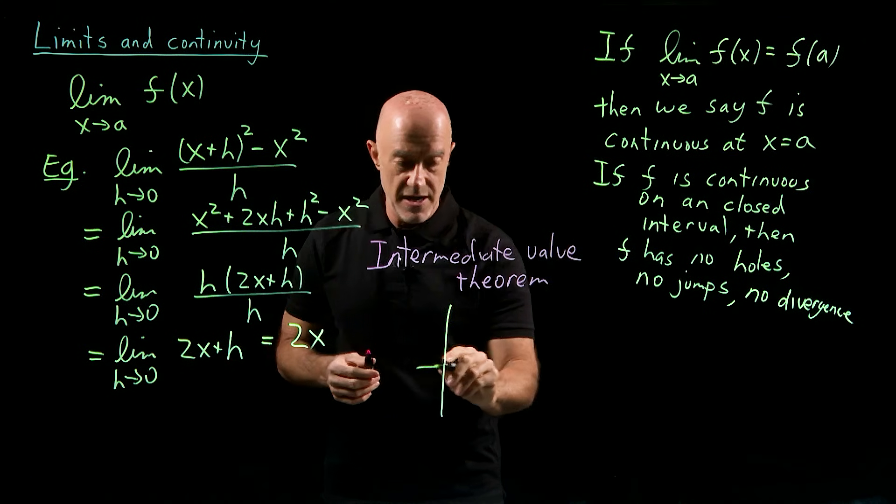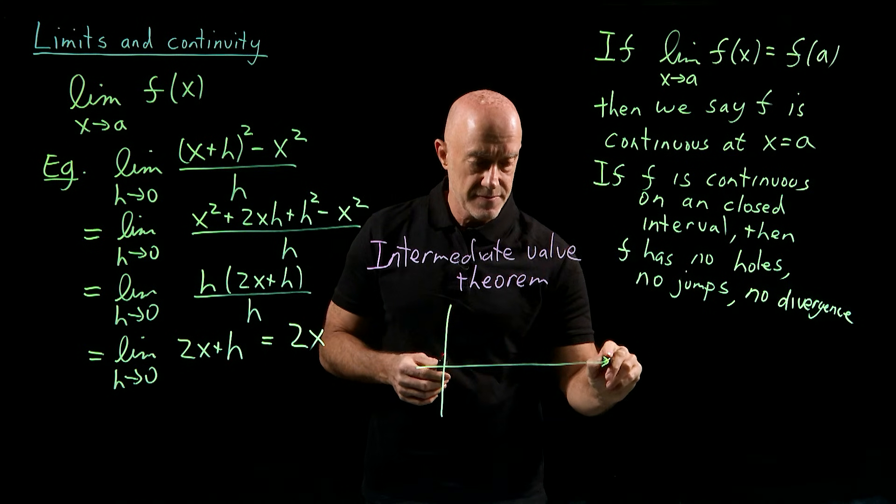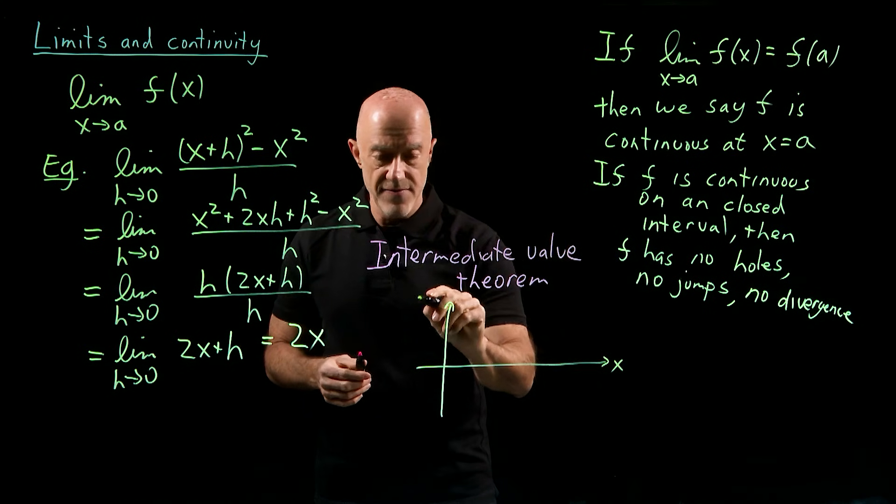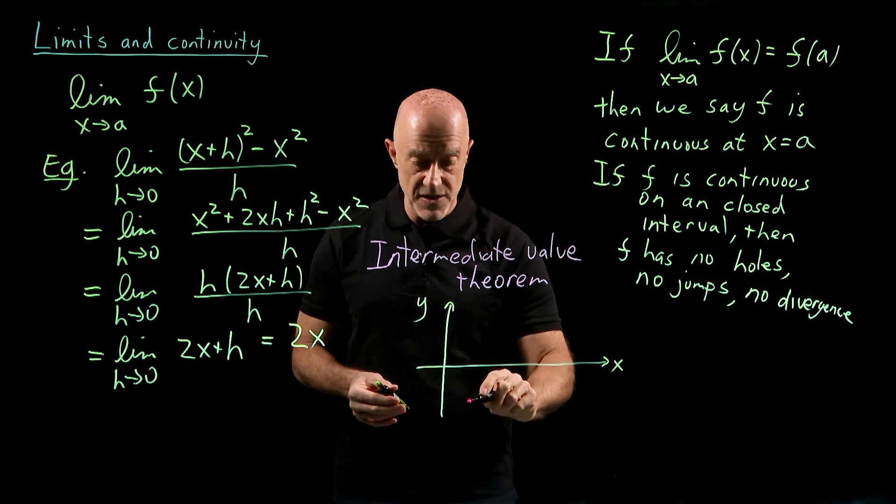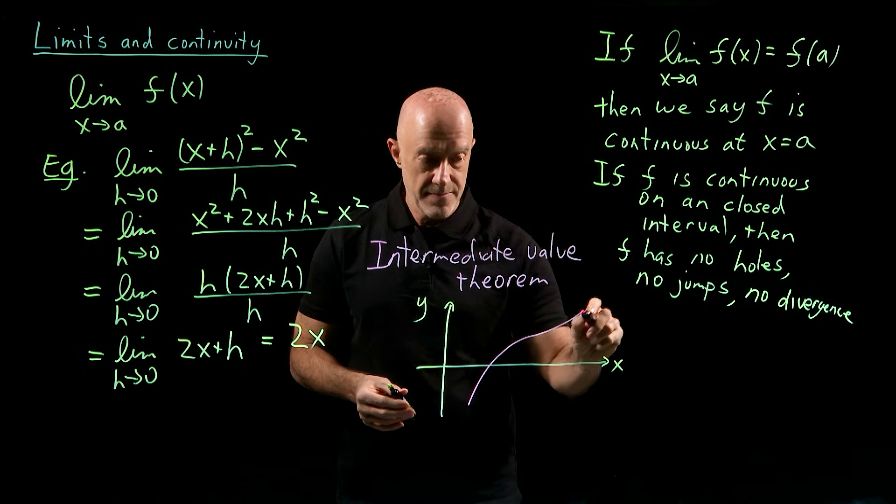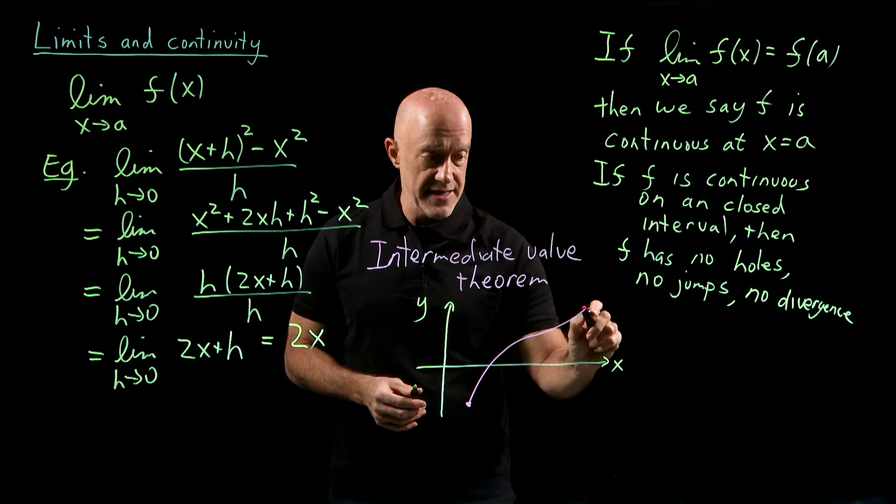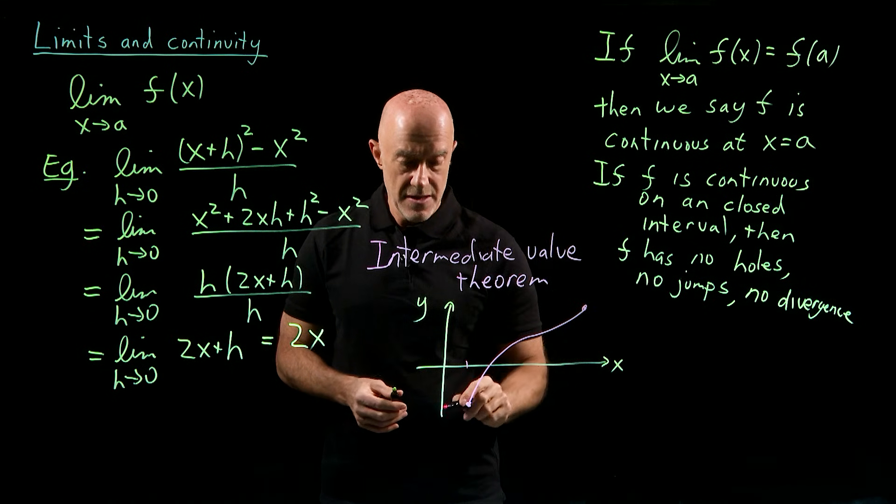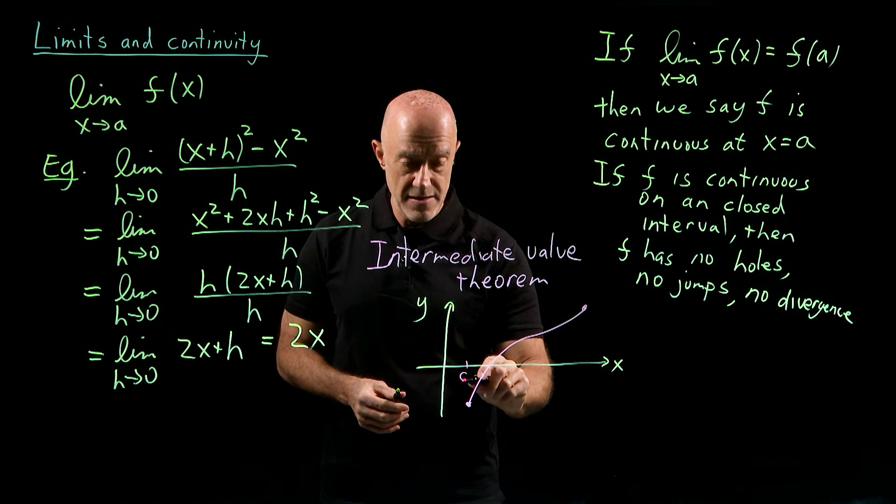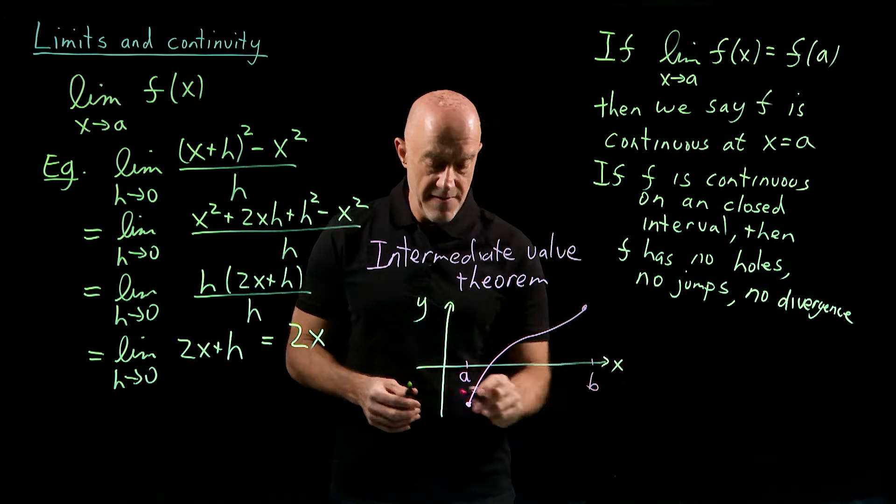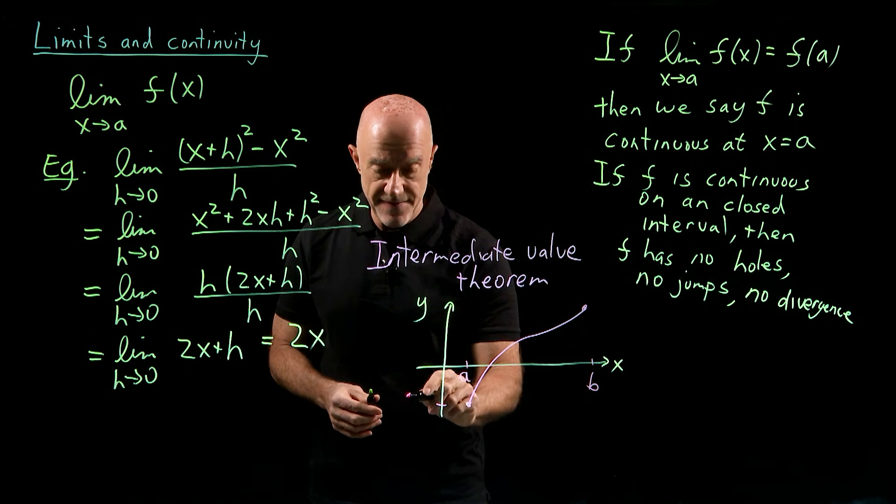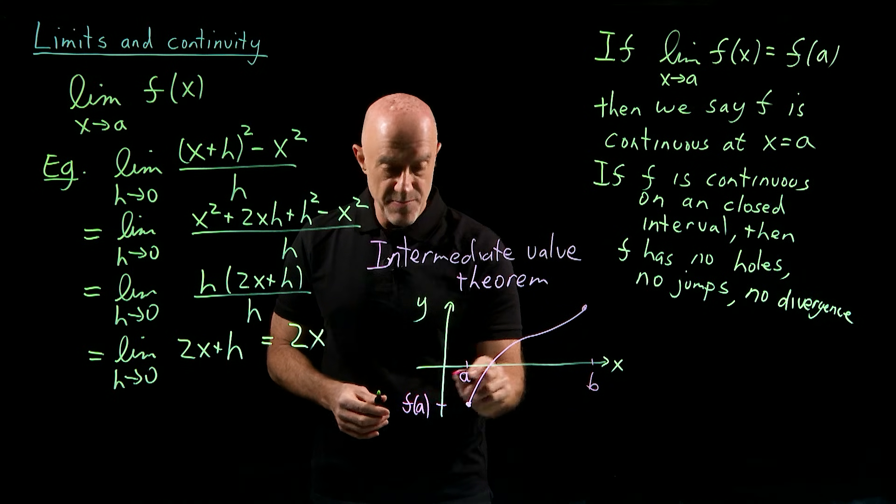So if we draw a graph of y versus x, the usual axis, and we have a function, the endpoints are contained. This is the point A, this is the point B. If the function has the value f(A) at the point A and f(B) at the point B...